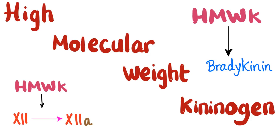It's Medicosis Perfectionalis. Resuming our lectures on bleeding and coagulation disorders, we have talked about primary hemostasis and secondary hemostasis. Today let's talk about high molecular weight kininogen, which produces bradykinin and activates factor 12 into factor 12a.